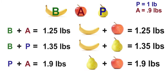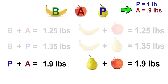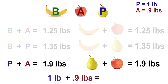Let's do a quick check to make sure our answers are correct. The weight of the pear and apple are now known. Let's use the third equation to check the math: the pear is one pound plus the apple is 9 tenths of a pound, which equals 1 and 9 tenths pounds. This checks out.